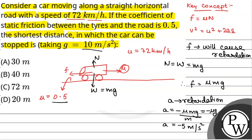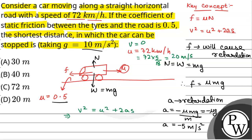Now, for the car to stop, we will have v equal to 0. And u is given as 72 km per hour — converting to m per second by multiplying by 5 by 18, this gives 20 m per second. Applying the equation of kinematics, v square equals u square plus 2as: 0 equals 20 square plus 2 into minus 5 into s. We have to find the shortest distance, so 10s equals 400, giving s equal to 40 metres.